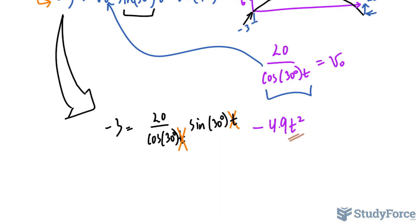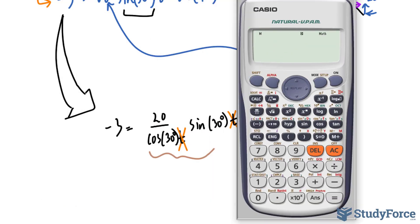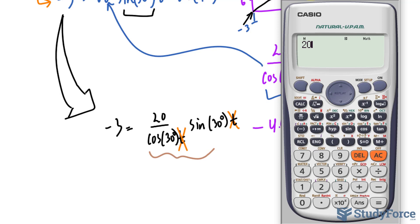First, I will simplify this part using my calculator. Make sure that your calculator is in degrees. So 20 times sine 30, I'm multiplying 20 and sine 30, dividing it by cosine 30. And that gives us a decimal value of 11.547.